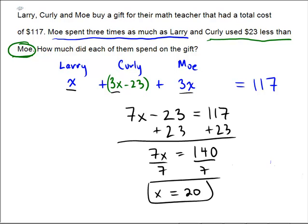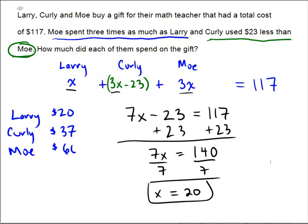The question was asking how much did each one of them spend on the gift. Larry spent x many dollars, and x is 20. Curly spent 3x minus 23: 3 times 20 is 60, and 60 minus 23 is 37, so Curly spent $37. And Moe is the big spender — Moe spent 3 times 20, which is $60. That gives our total of $117.